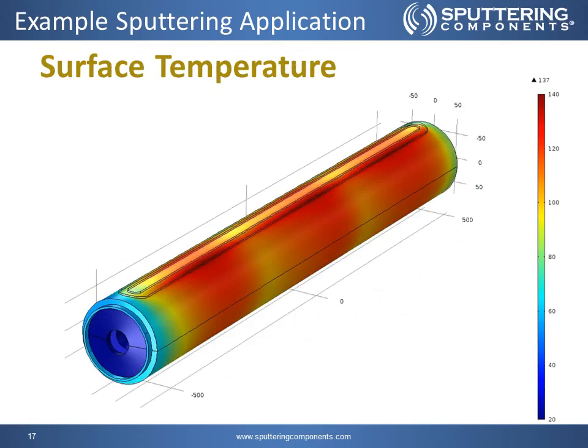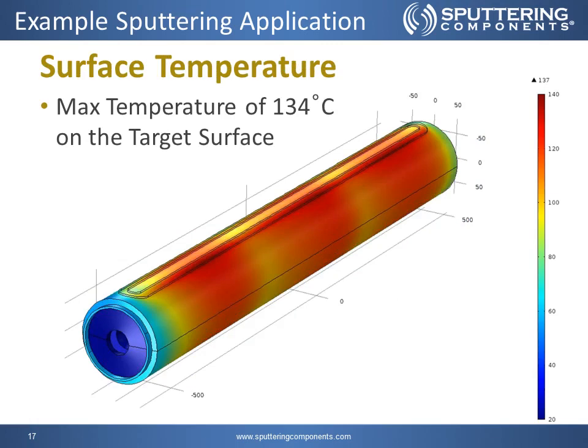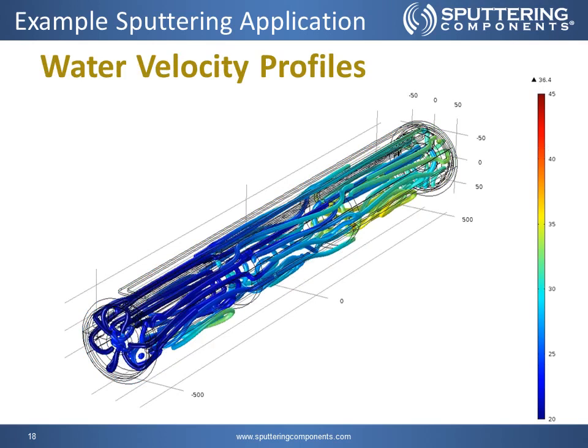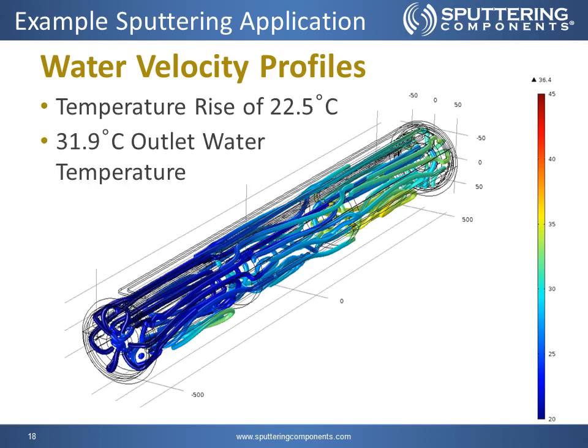Next are our results showing surface temperature. We have a maximum surface temperature of 134 degrees Celsius. Next, we have our water flow velocity profiles. These are streamlines that show the direction the water is flowing, colored for temperature. We have a temperature rise of 22.5 degrees Celsius, and a 31.9 degrees Celsius outlet water temperature. If actually running this, the customer would be able to measure the outlet water temperature to verify if the simulation is accurate.